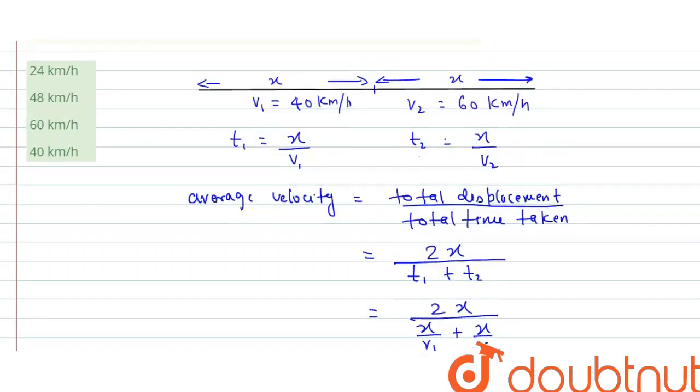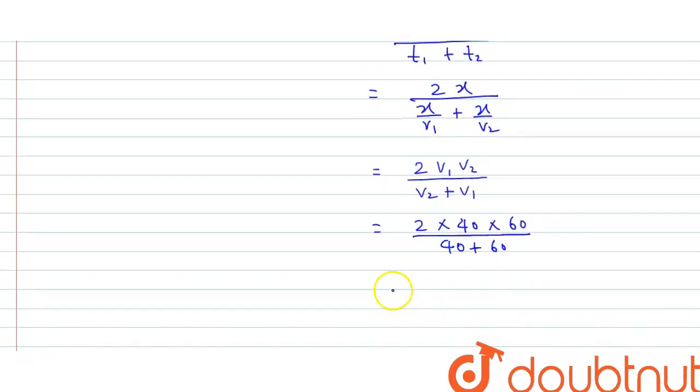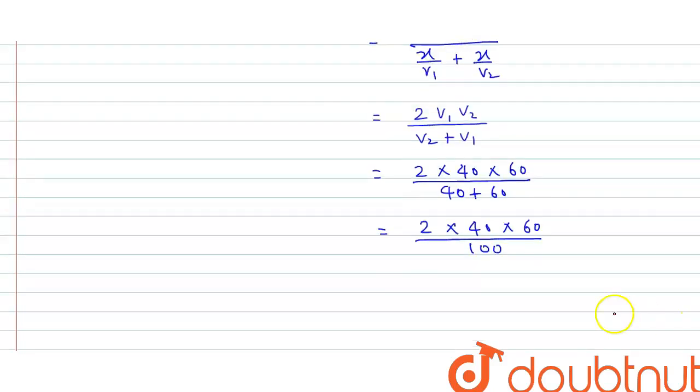Now put the value of v1 and v2 which is 40 and 60. So this will equals to 2 into 40 into 60 divided by 60 plus 40. So this is equals to 2 into 40 into 60 divided by 100. So final answer is 48 km per hour.